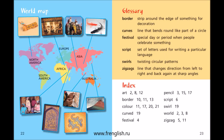World Map. Glossary: Border — strip around the edge of something for decoration. Curves — line that bends round like part of a circle. Festival — special day or period when people celebrate something. Script — set of letters used for writing a particular language. Swirls — twisting circular patterns. Zigzags — line that changes direction from left to right and back again at sharp angles.